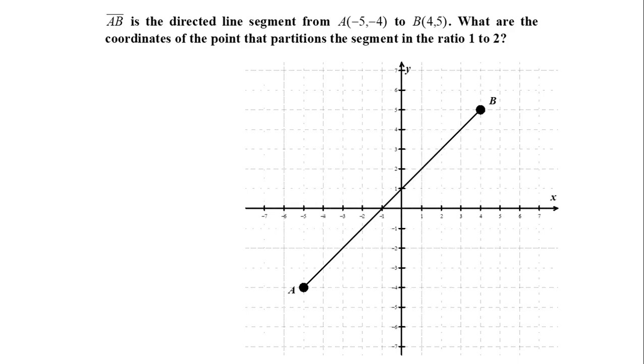A is located at negative 5, negative 4. B is 4, 5. Connect the points. Next step is to make a right triangle. So here's your right triangle.